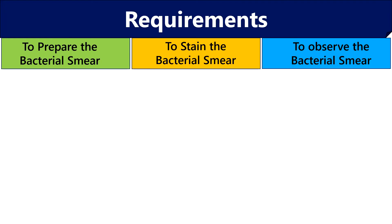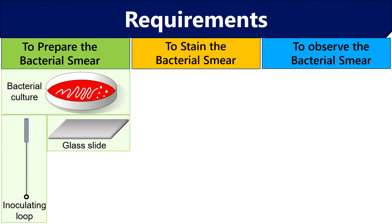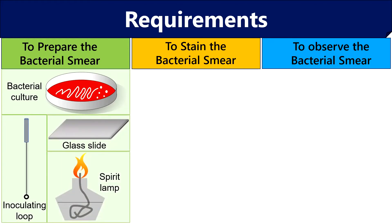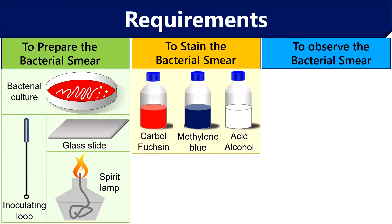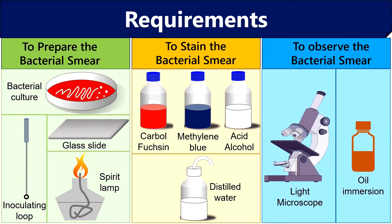To prepare the bacterial smear, we need bacterial culture, an inoculating loop, a glass slide, and a spirit lamp. To stain the bacterial smear, we require carbolfuchsin, methylene blue, and acid alcohol. We also need distilled water to wash the stain. For microscopic observation, we need a light microscope and oil immersion to examine the cells clearly.